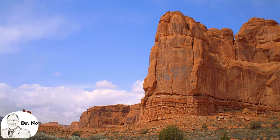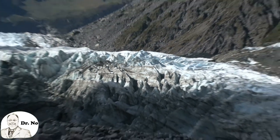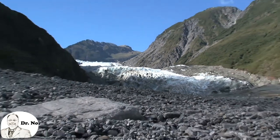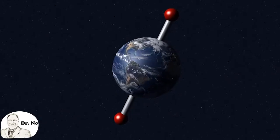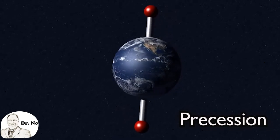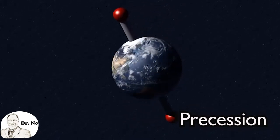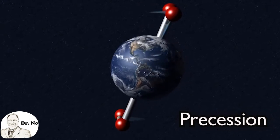Precession. Aside from the tilt, the axis also wobbles like a top. A complete wobble cycle is more or less 26,000 years. This motion is caused by tidal forces from the Sun and Moon.